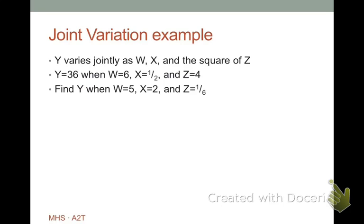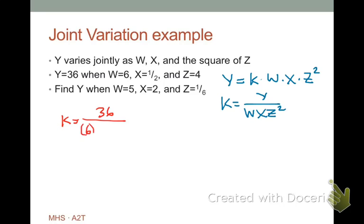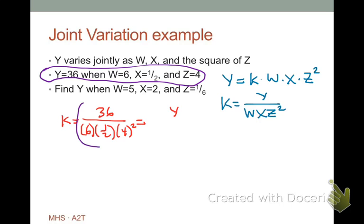So, k is our constant of variation. Here is an example problem. We say y varies jointly as w, x, and the square of z. So, we'll write that y equals k times w times x times z squared. Notice it says the square of z, so we have a z squared term at the end. So, then I'll solve for k and get k equals y over w, x, and z squared. So, now I can use the constant to set one set of values equal to the other. So, I get 36 over 6 times 1 half times 4 quantity squared. That is my first set of terms. And that has to equal my second set of terms over here.